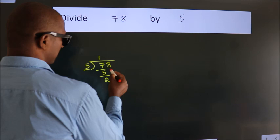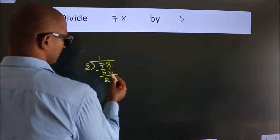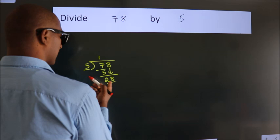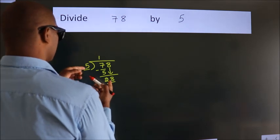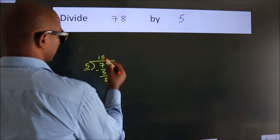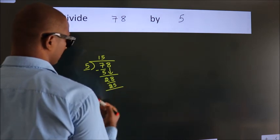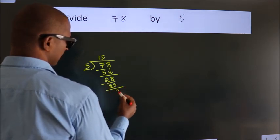After this, bring down the beside number. So 8 down. So 28. A number close to 28 in the 5 table is 5 fives 25. Now we subtract. We get 3.